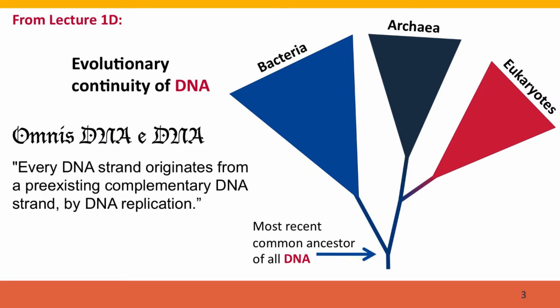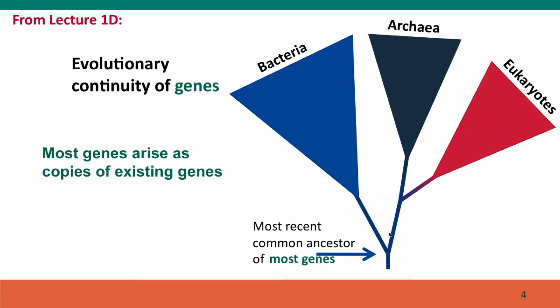You'll remember from Module 1 that we talked about the evolutionary continuity of DNA — how, like cells, every DNA strand originates by replication from existing DNA, so we can trace DNA's ancestry all the way back through the history of life. Well, for most genes, we can do the same thing, at least in principle.